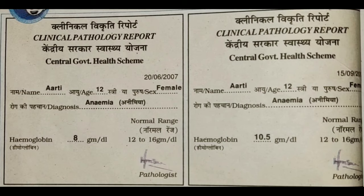After taking those iron-rich food items for a few months, another clinical pathology report was taken for Aarti, still aged 12, female. The date of the second report is 15th September 2007 — almost three months after the first report of 20th June. When the second diagnosis report came, it still showed anemia, but the hemoglobin rate had increased from 8 to 10.5 grams per deciliter — an improvement of 2.5 grams per deciliter in three months.